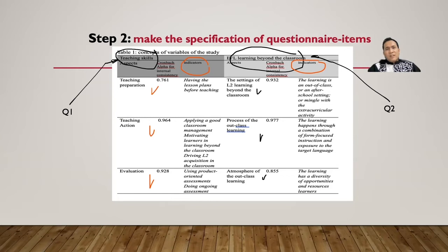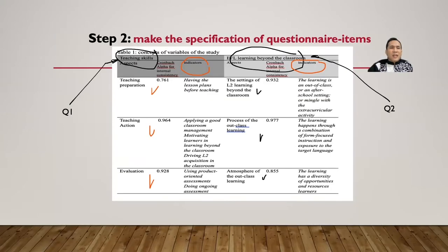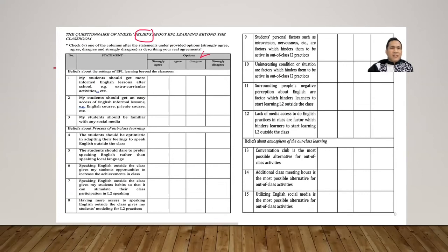The same applies to the second questionnaire on EFL learning beyond the classroom. For example, the setting indicator might be 'learning is in an out-of-class or after-school setting, mingled with extracurricular activities.' You look at things about the setting, such as how many extracurricular activities respondents have.